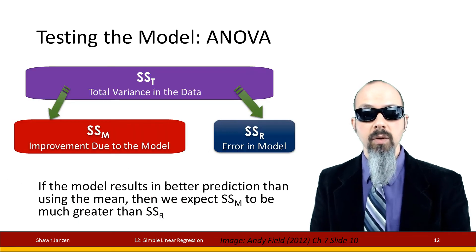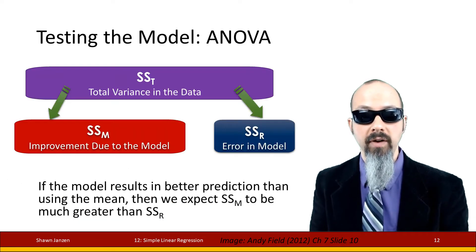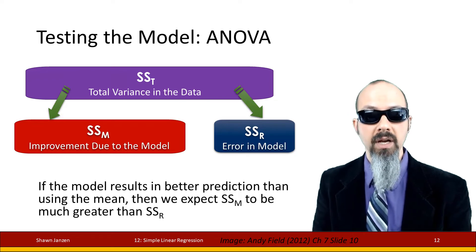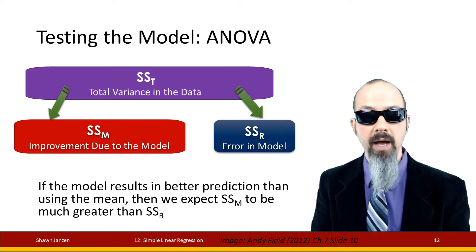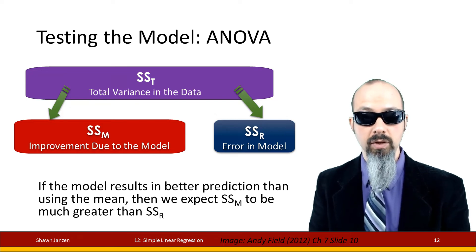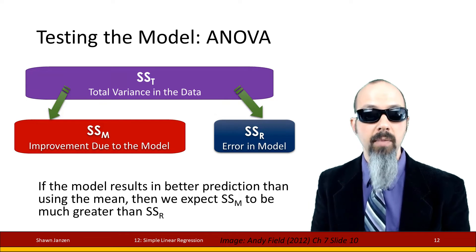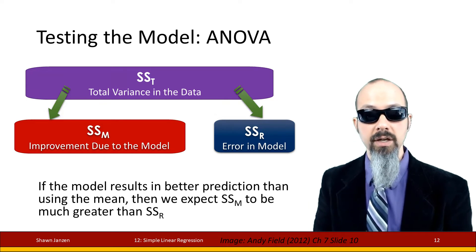We're back into this sort of ANOVA territory where total variation is both the combination of how much your model improves by plus the error, and those two sum to the total. If your model error is improving, then you're going to expect that your model variation is going to be larger than your error variation.